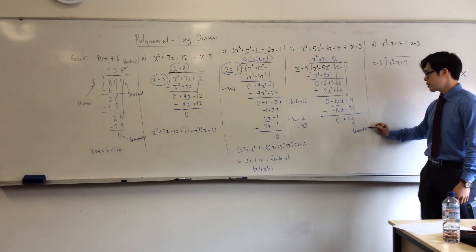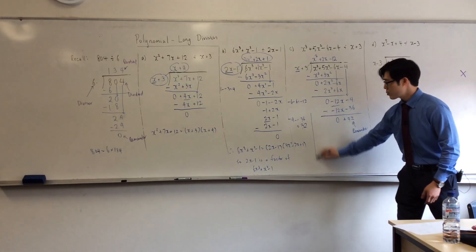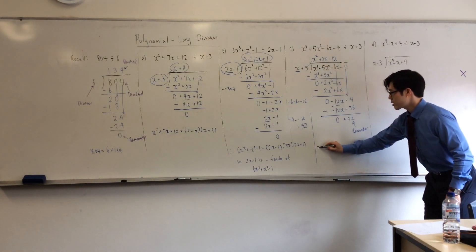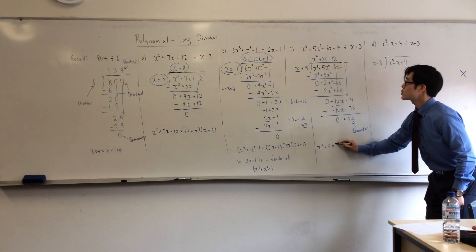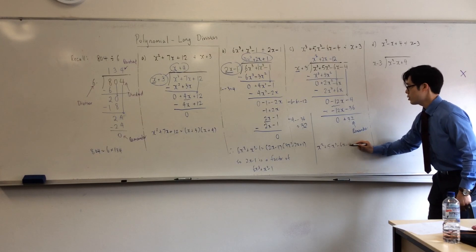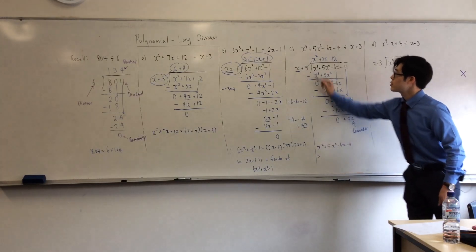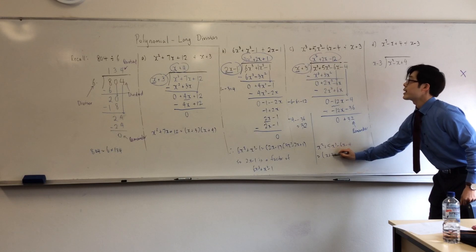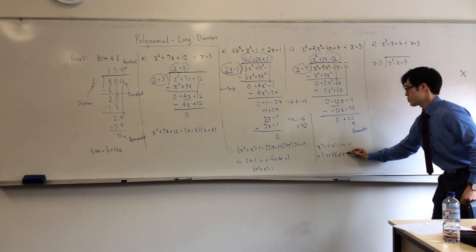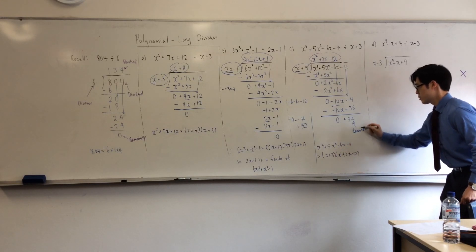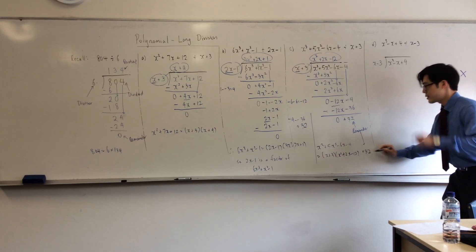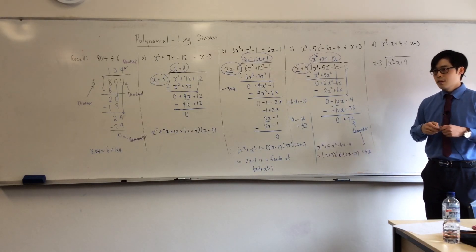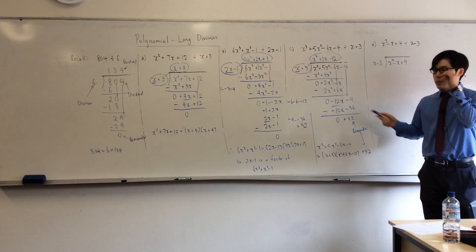If there's a remainder, the way you write your answer is: x cubed plus 5x squared minus 6x minus 4 is equal to that times that, plus the remainder, which is 32. That's how you do this question if there's a remainder. So do you still say it's a factor? It's not a factor because there's a remainder — only specify that if they ask you.